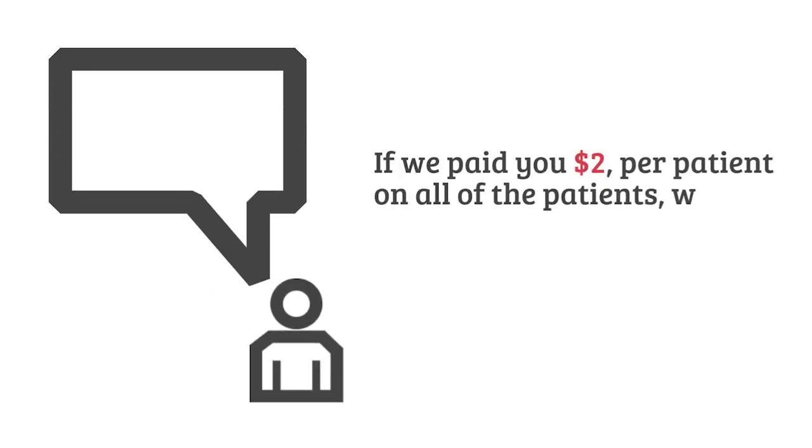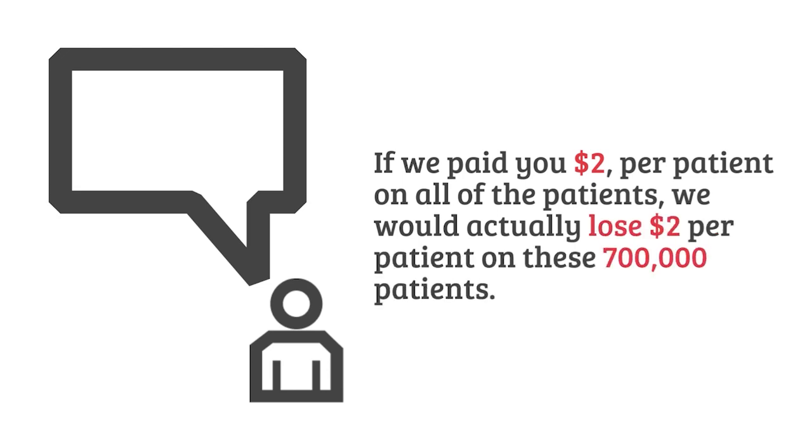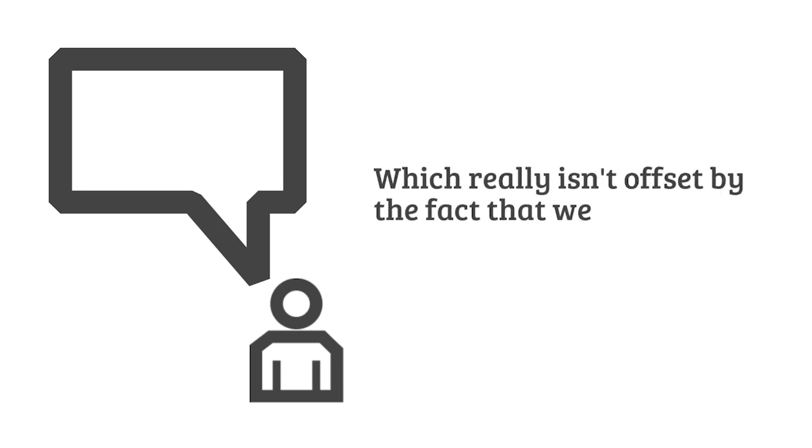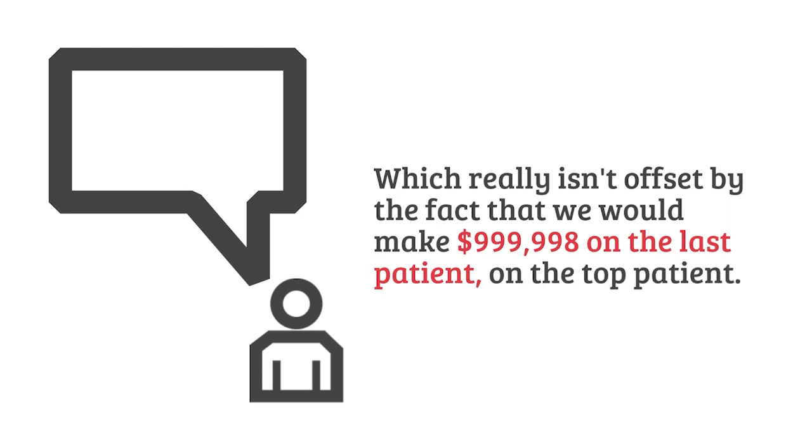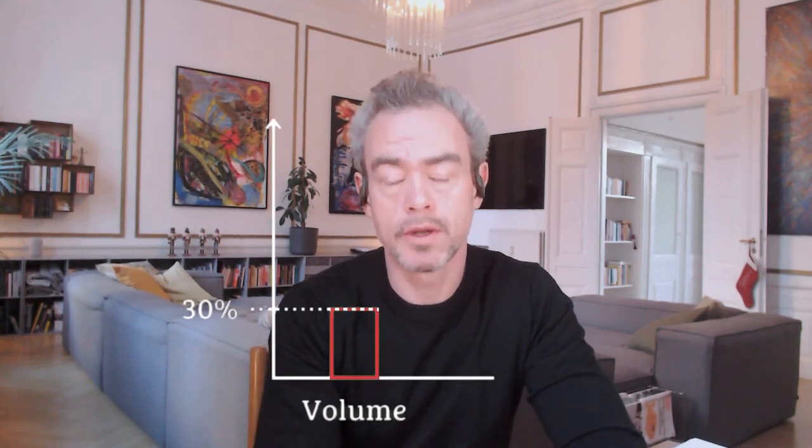This is an issue. It became an issue when they were taking this model to insurance companies, because the insurers would look at their 1 million patients and say: if we paid you $2 per patient on all patients, we would actually lose $2 per patient on those 700,000 patients — which isn't really offset by making $999,998 on the top patient. So what insurers were beginning to do was divert the flow: instead of sending 1 million patients, charged at $2 each worth $2 million, they'd try to send only 300,000, worth $600,000. Suddenly you have a monetization issue where you only get 30% of the intended volume.